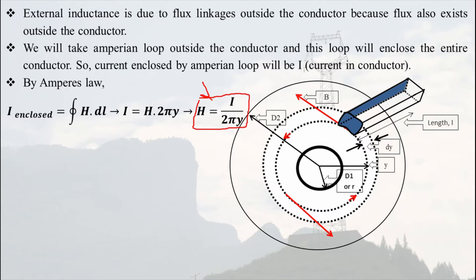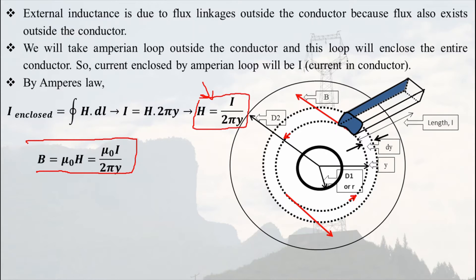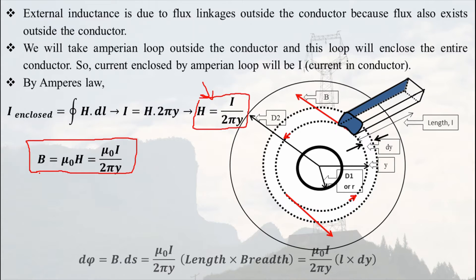Now, dφ = B·dS. Here B = μ₀H, so B = μ₀i / (2πy). We are simply multiplying μ₀ with the expression for H. In the expression dφ = B·dS, B is known and we need to find dS. The area dS must be perpendicular to the magnetic field B or H.